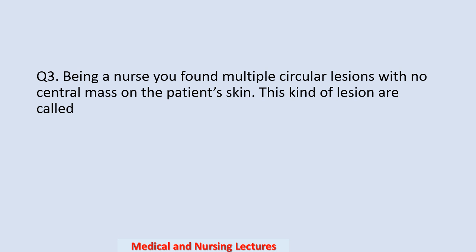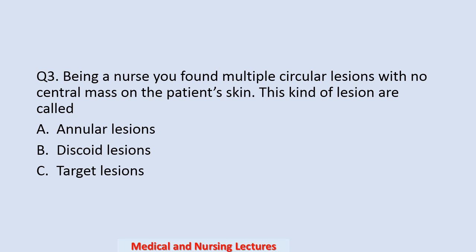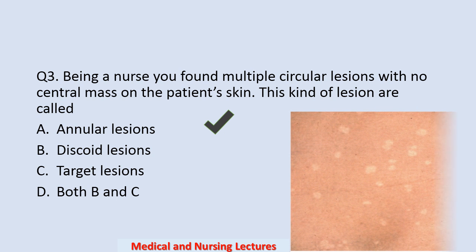Question number three: being a nurse, you found multiple circular lesions with no central mass on the patient's skin. This kind of lesion is called — options are annular lesions, square lesions, target lesions, or both B and C. The correct option is annular lesions. In the picture, you can see annular lesions found on the skin.